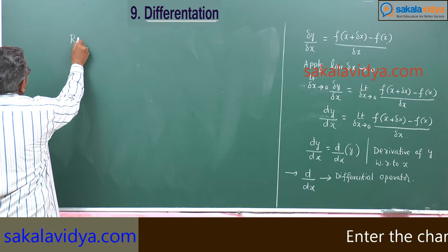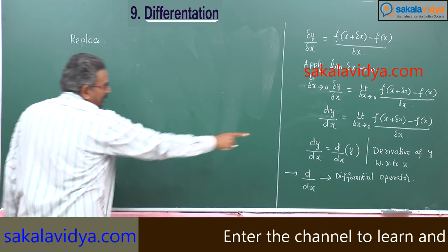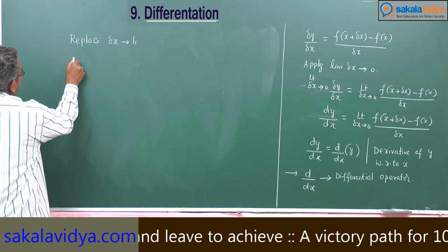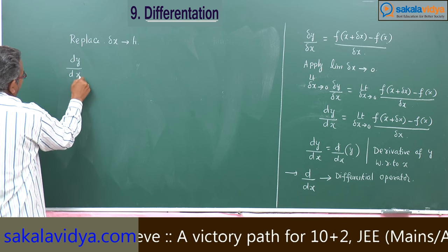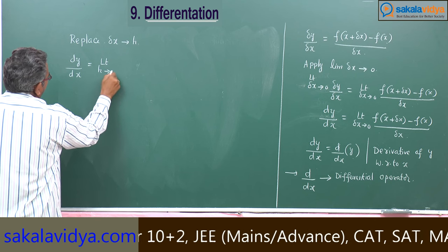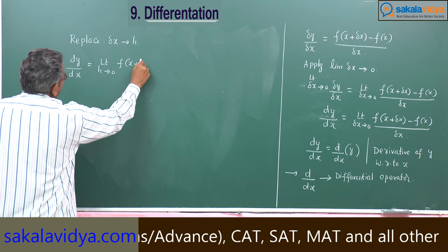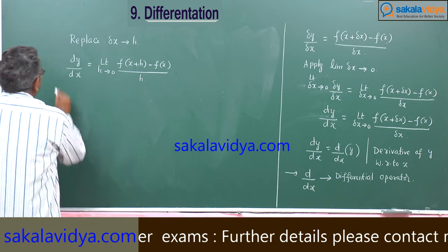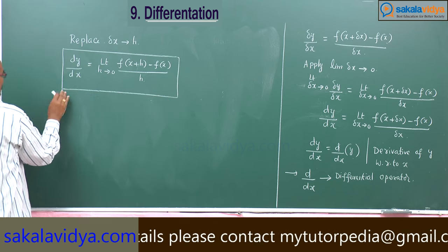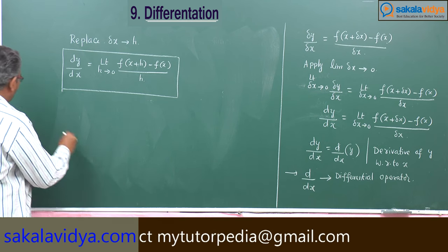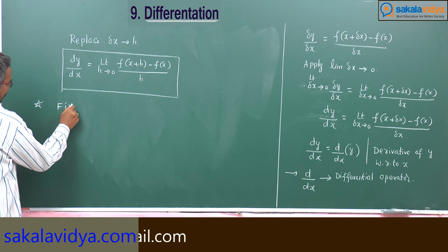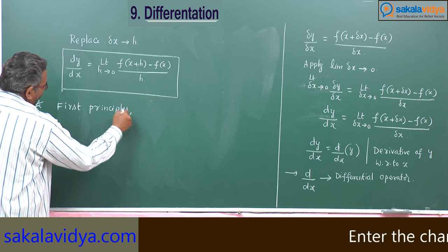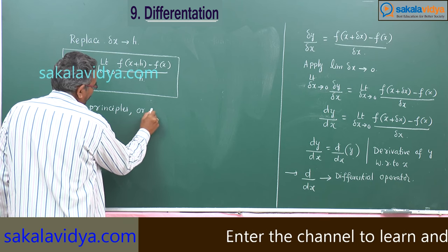Let us replace delta x by h. This becomes dy by dx is equal to limit h tends to 0, f of x plus h minus f of x by h. This is known as first principles — also called first principles or by definition.